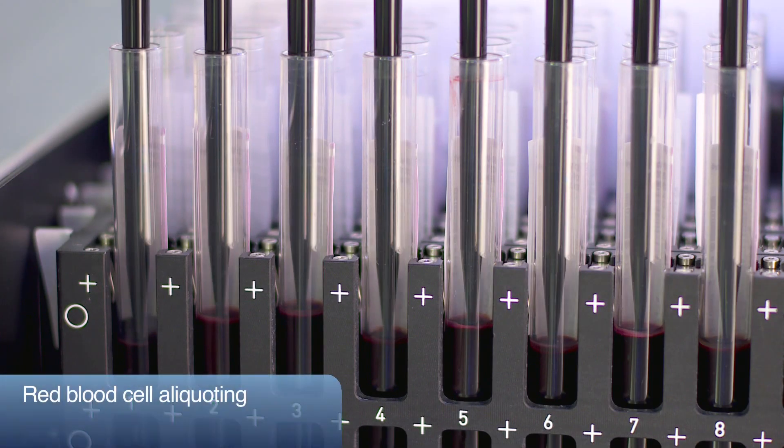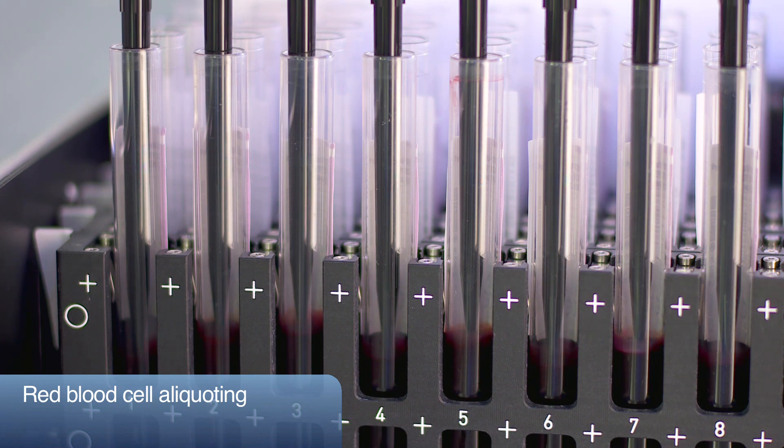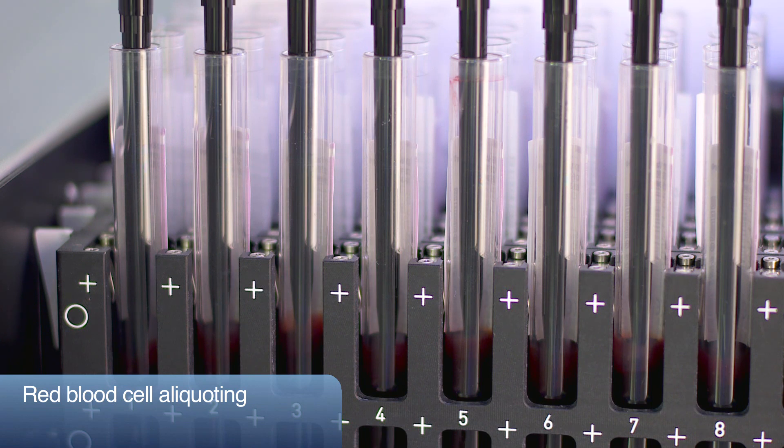If required, the red blood cells can also be aliquoted from the primary tube. To perform this action, a new and clean tip can be used, or the same tip used for the buffy coat pipetting to reduce consumables costs.